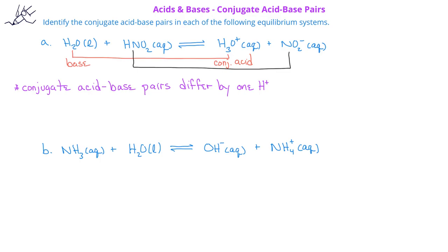Again, we ask the question, which of these two species is the acid and which is the base? The HNO2 is donating a hydrogen to the water, so therefore, the nitrous acid is acting like an acid. The nitrite can act like a base because it can accept a hydrogen ion from the hydronium in the reverse reaction. So therefore, the nitrite ion would be the conjugate base of nitrous acid.